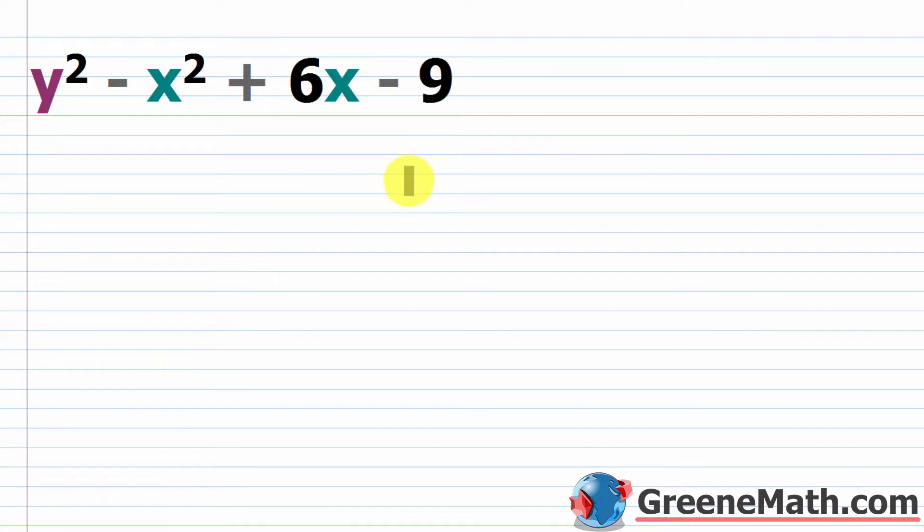So the next thing is, if you're looking at this problem and you're trying to factor it, you might notice that x squared plus 6x minus 9 is similar to, but not exactly, a perfect square trinomial.